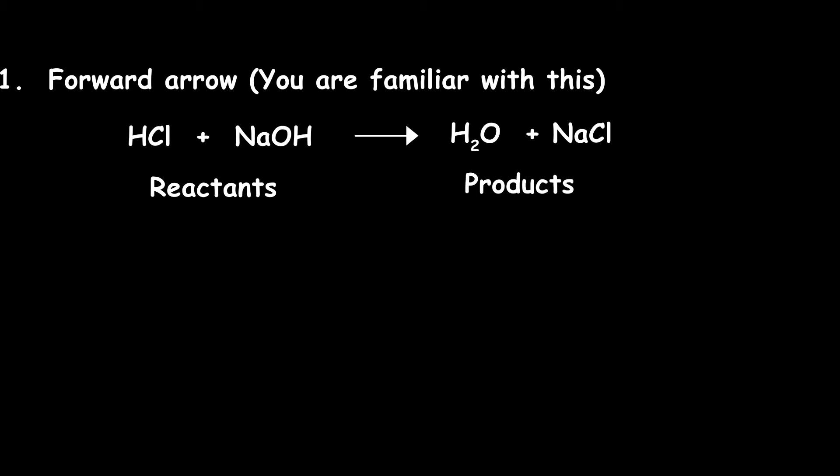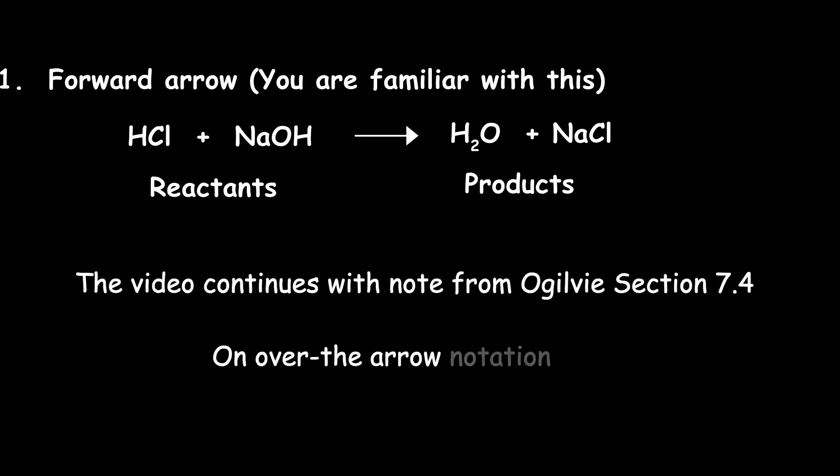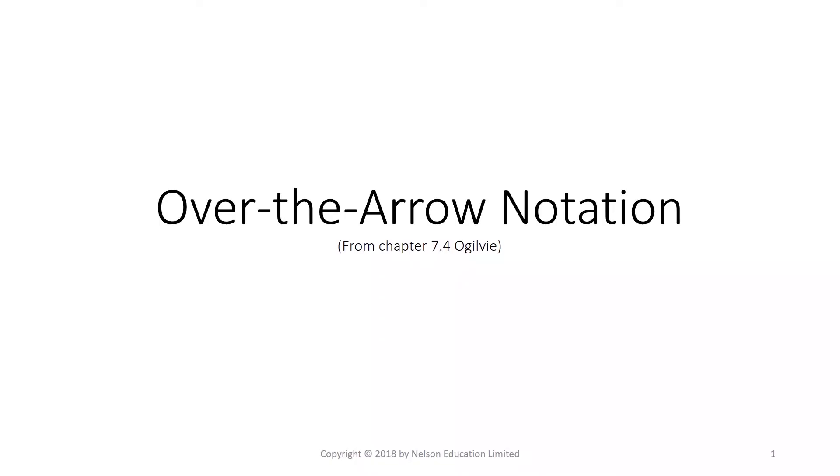This is a chemical equation and is normally balanced. This video continues with notes from Ogilvy's mechanistic pattern. In section 7.4, this is about over-the-arrow notation and how to interpret the reaction.